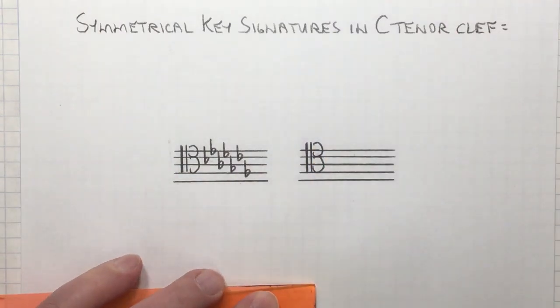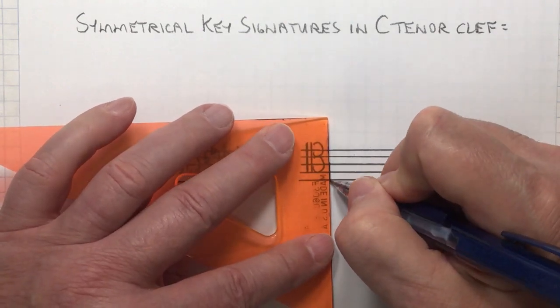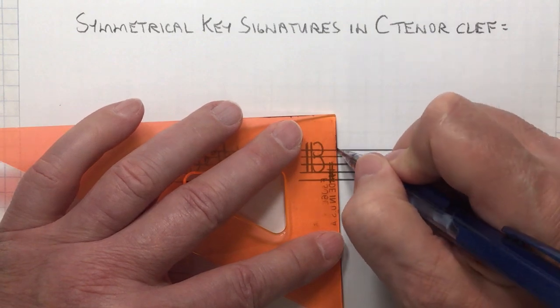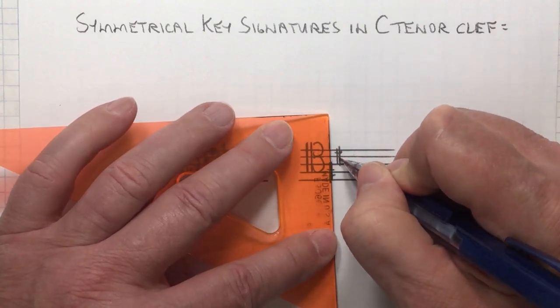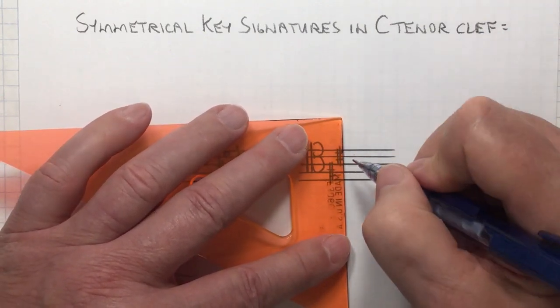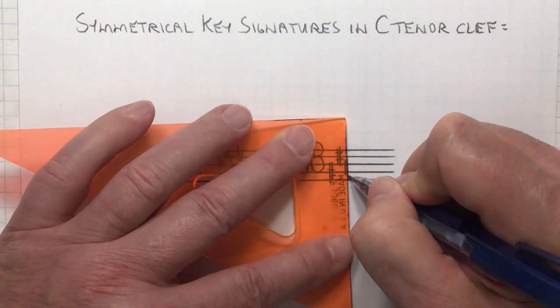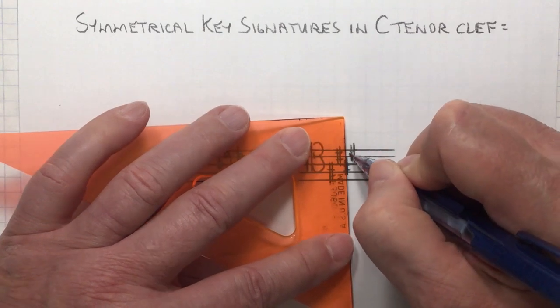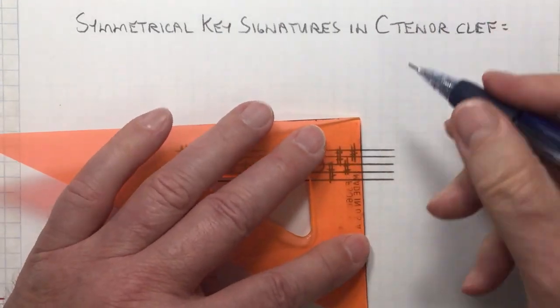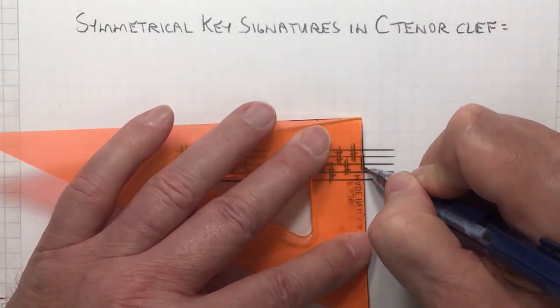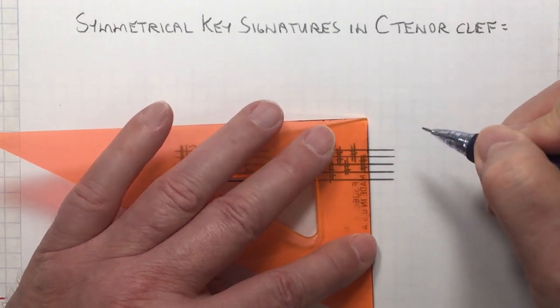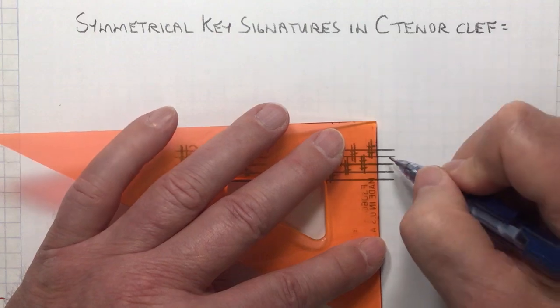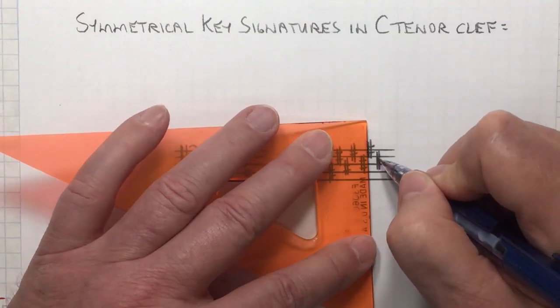Backwards, the order of sharps: F-sharp, C-sharp, G-sharp, D-sharp, A-sharp, E-sharp, B-sharp.